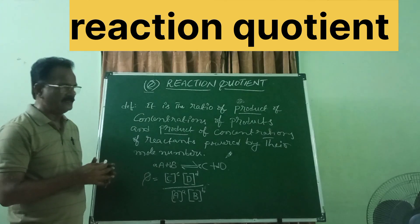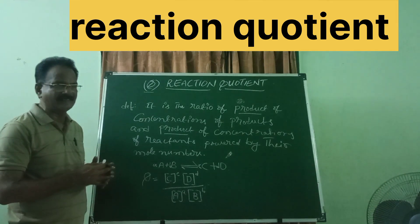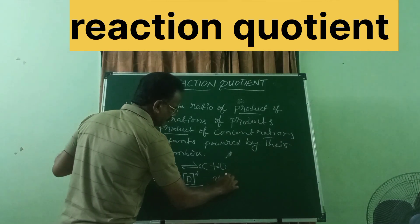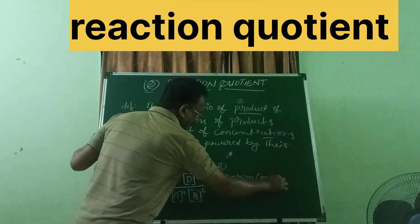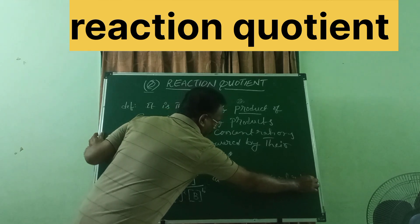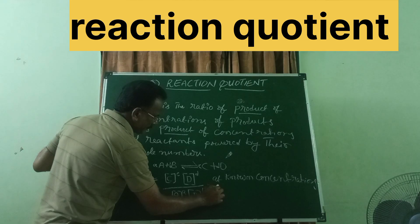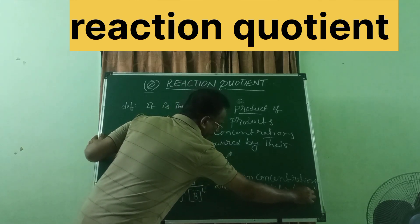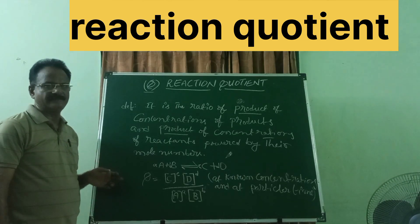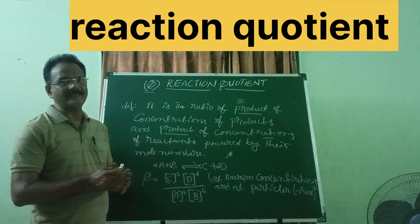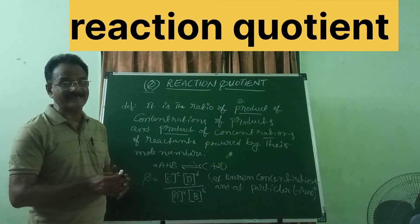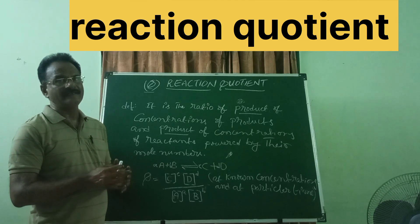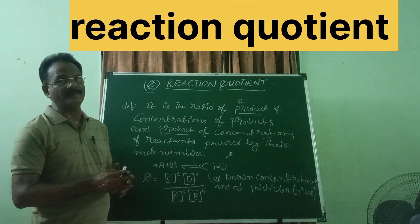Reaction quotient should be written when the concentrations of reactants and products are known at that particular time. We can consider the reaction quotient when the concentration of reactants and concentration of products are known at a particular time. Reaction quotient is concerned with a particular time — keep that in mind.